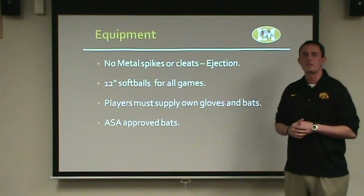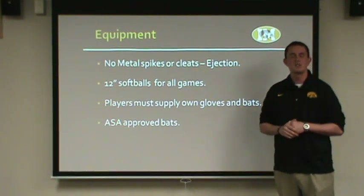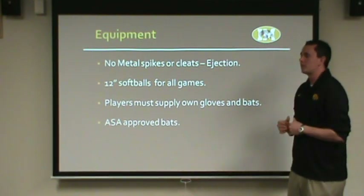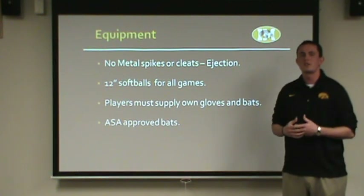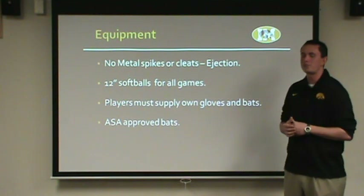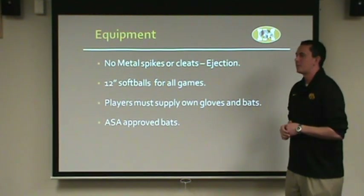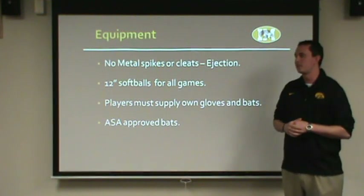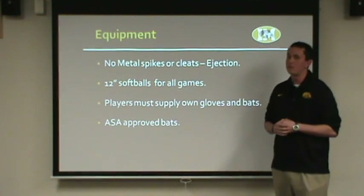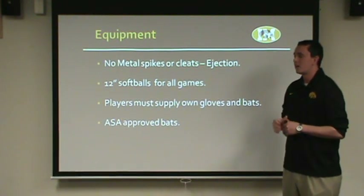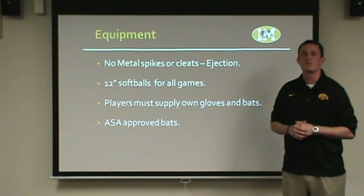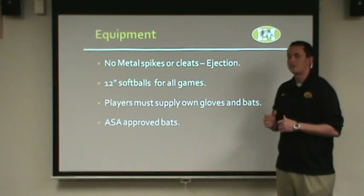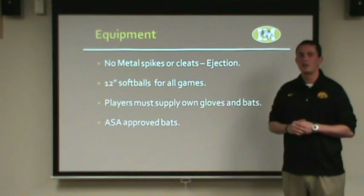Equipment: we want to make sure you have no metal spikes or cleats — if you do, this will result in an ejection. Make sure none of your team players are wearing these to the facility as they are not permitted. Twelve-inch softballs will be used for all games — men's, women's, and co-rec — and players must supply their own gloves and bats. We may have a limited supply at the facility from lost and found, but the safe bet is every player brings their own. All bats must be ASA approved; we will have an illegal bat list at the facility.